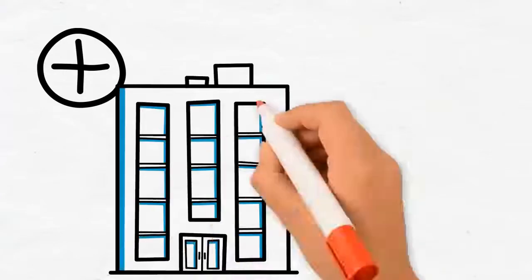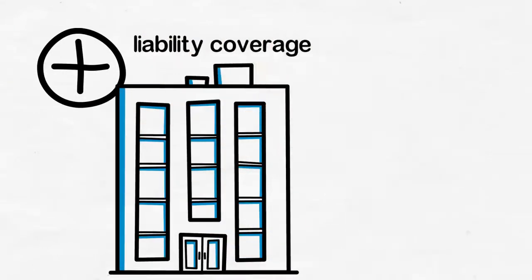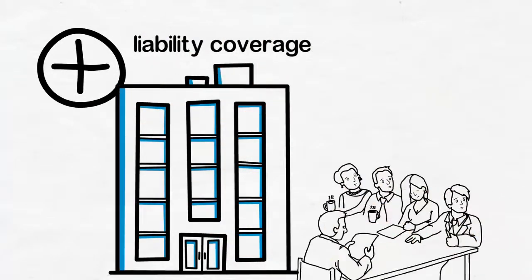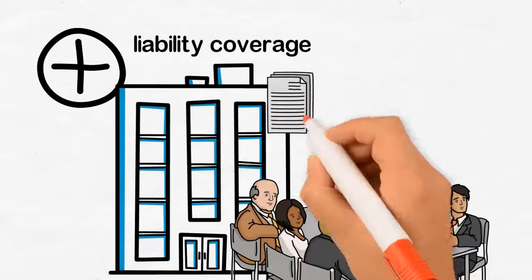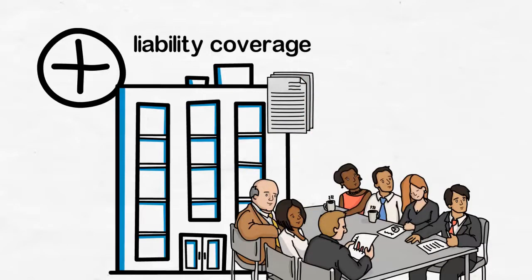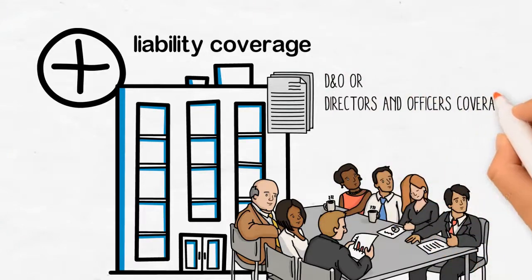In addition, the condo association board should carry directors and officers liability coverage. As board members, those unit owners sitting on the board have additional liability exposures as a result of their work on the board. These exposures are addressed by this important extension of coverage, often called D&O, or Directors and Officers Coverage.